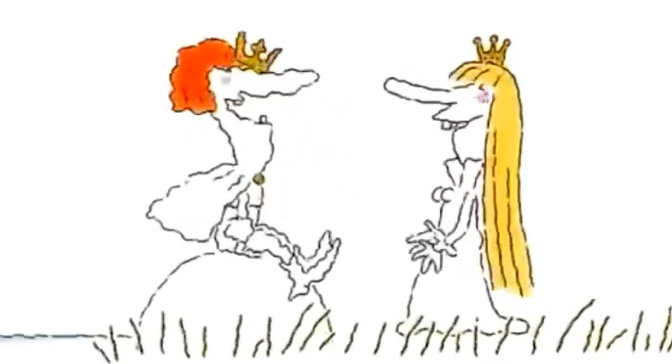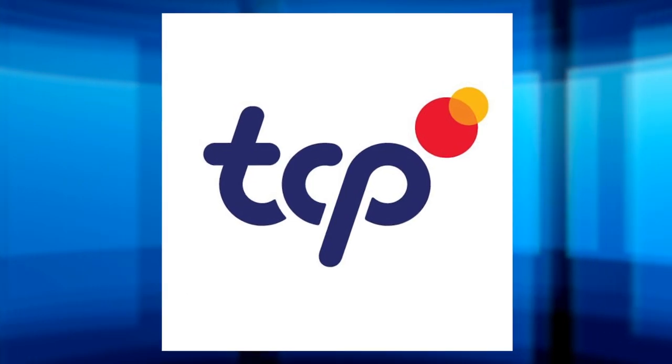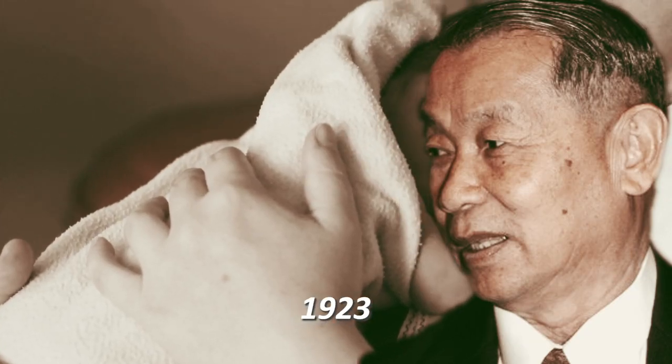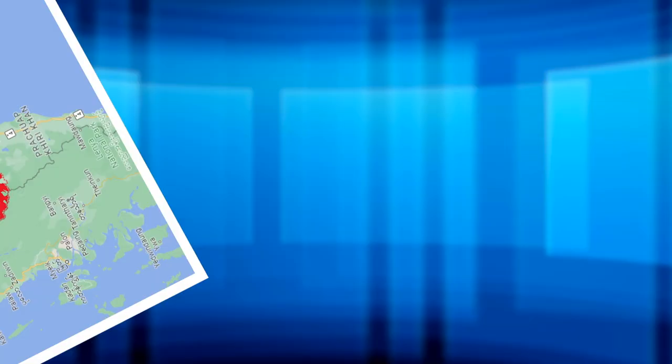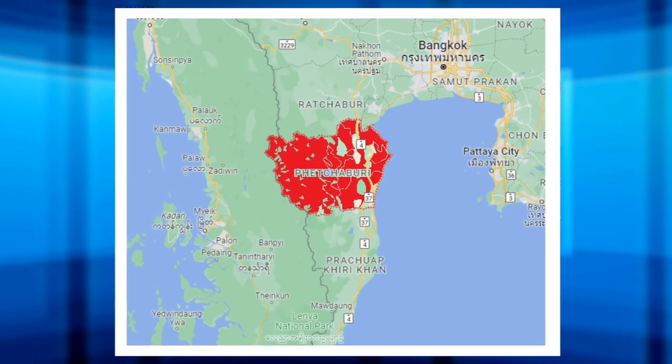Red Bull's narrative begins with the humble beginnings of Chaleo Yovidya, the founder of TC Pharmaceutical Industries. In 1923, he was born in Petit, one of Thailand's 76 provinces, 330 kilometers north of Bangkok.